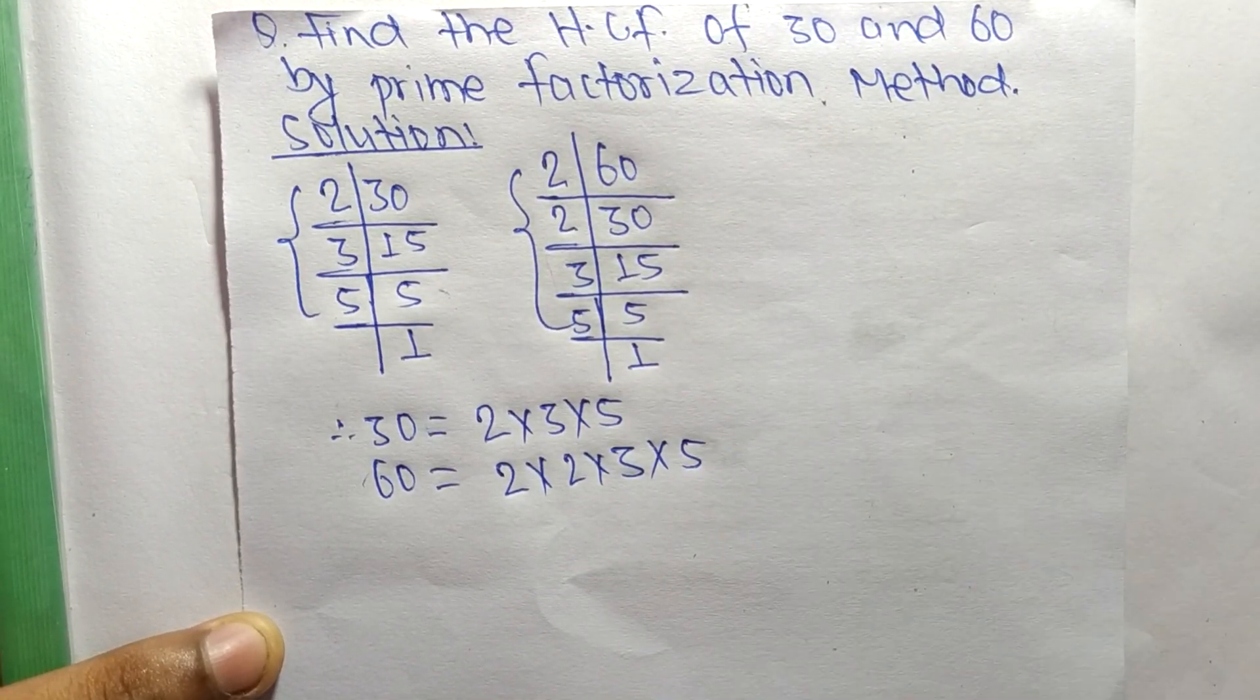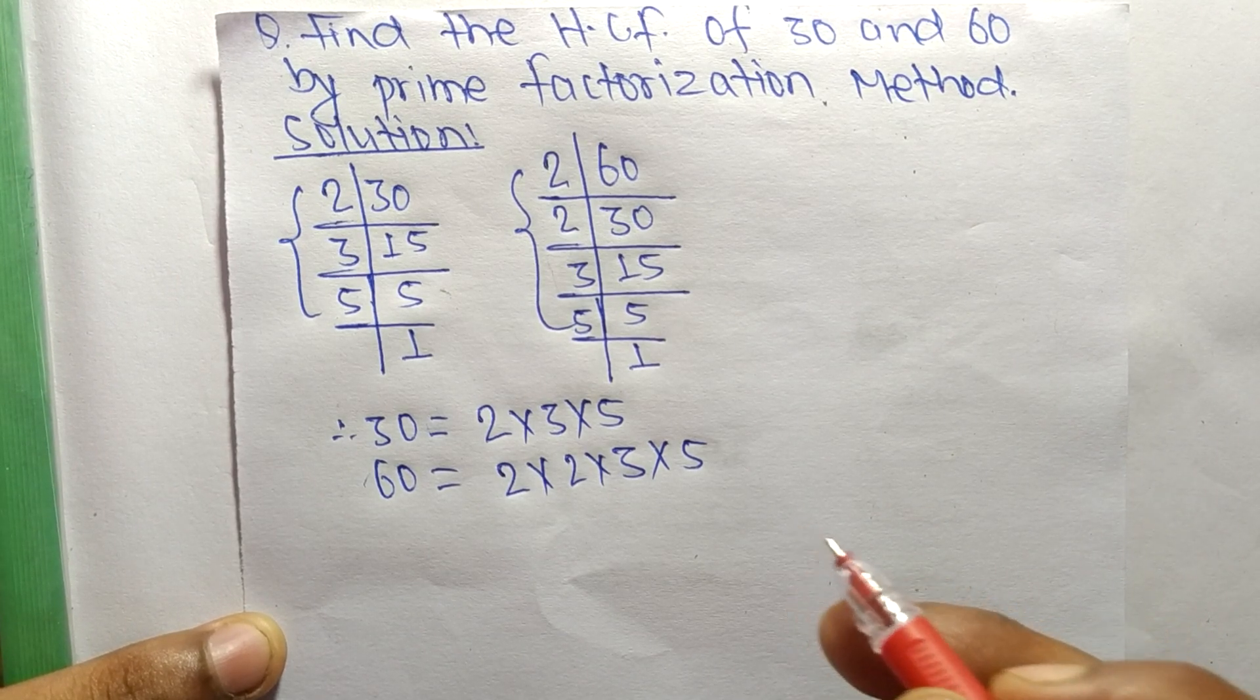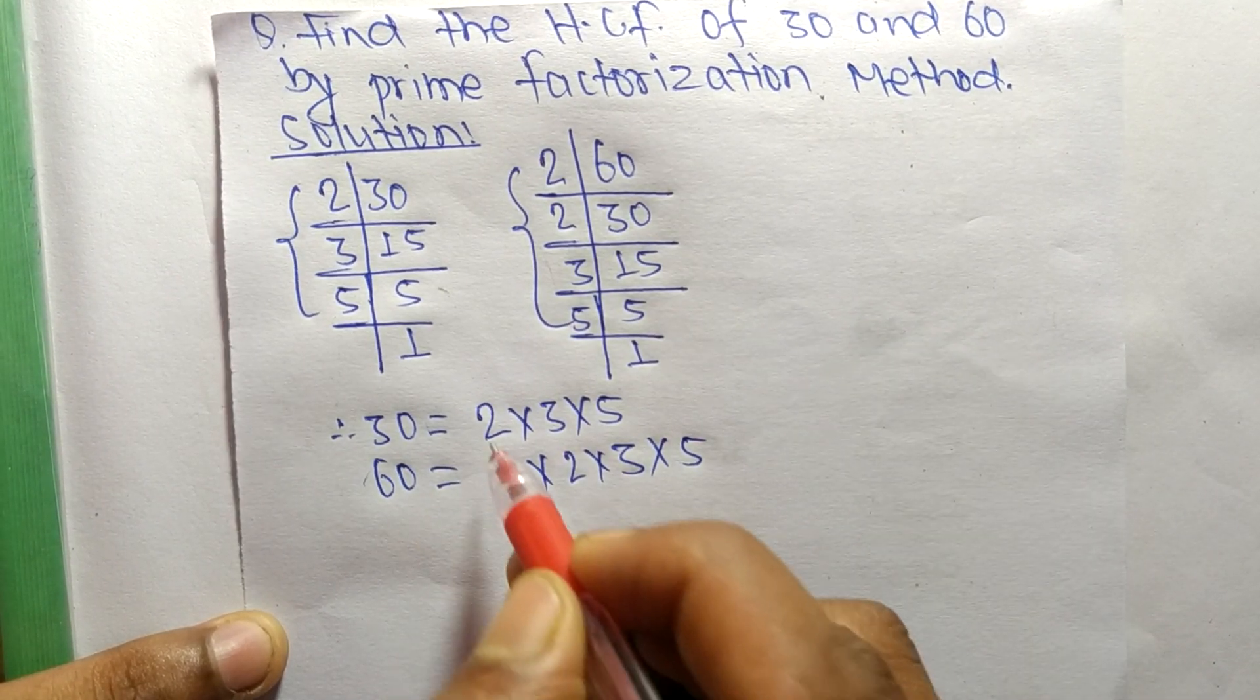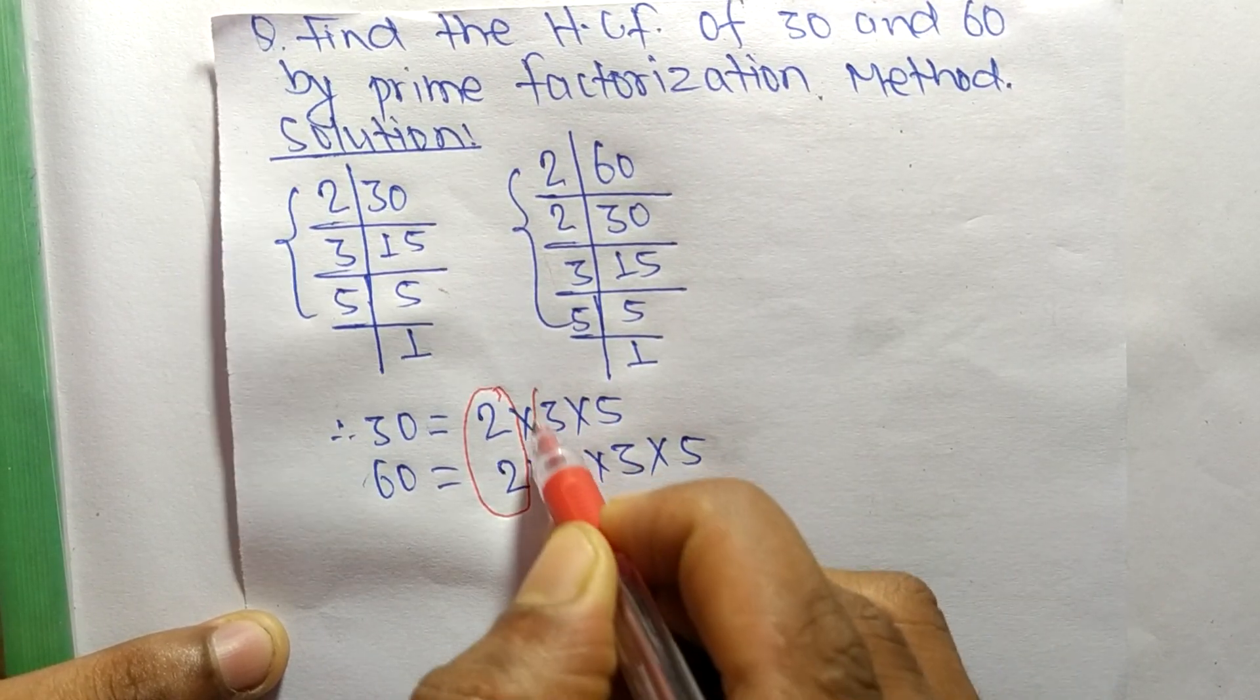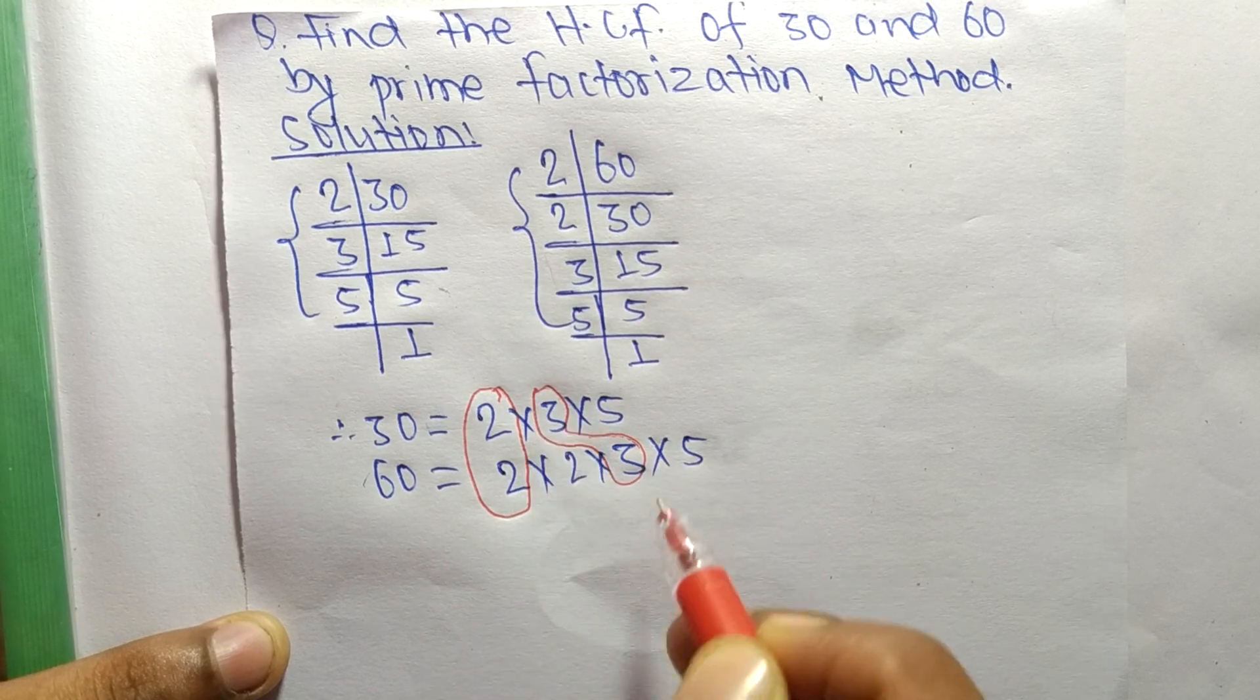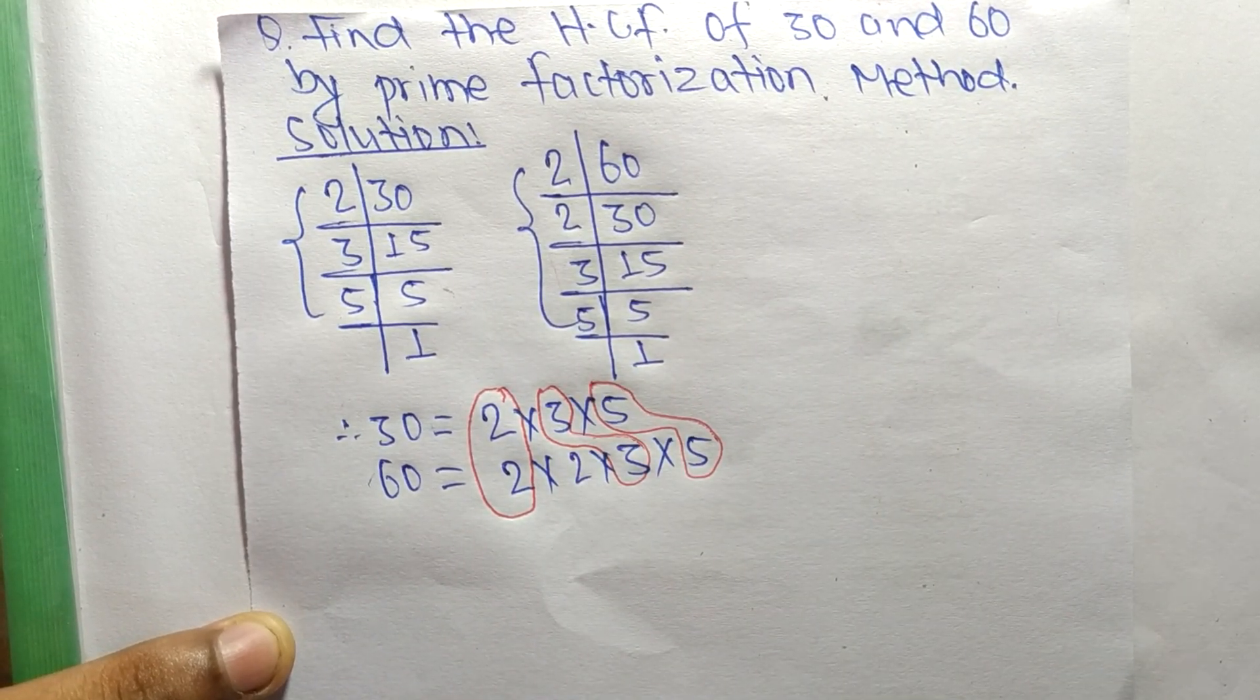So now we have to select the common factors in the prime factors of 30 and 60. So the first common here is 2, and second common is 3, and the third one is 5.